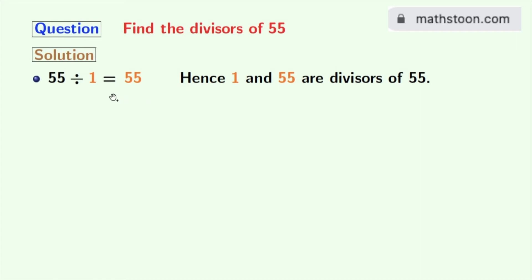Next numbers 2, 3 and 4 do not divide 55. So we will try for 5 and see that 55 divided by 5 is 11. Hence 5 and 11 are the divisors of 55.